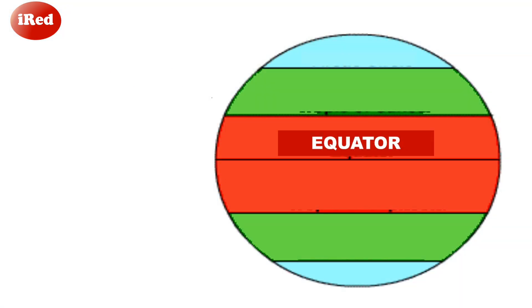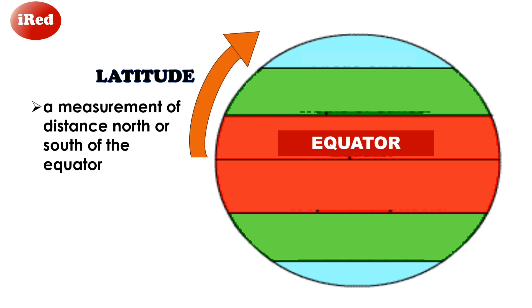You may recall that latitude is a measurement of distance north or south of the equator. It measures how close or far the place is from the equator. From the equator, the zero latitude, the latitude increases as you travel north or south, reaching 90 degrees at the north or south pole.